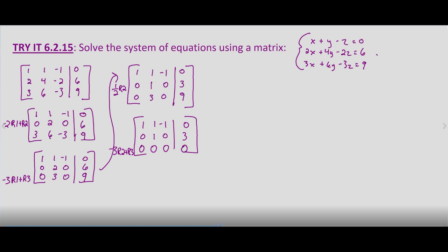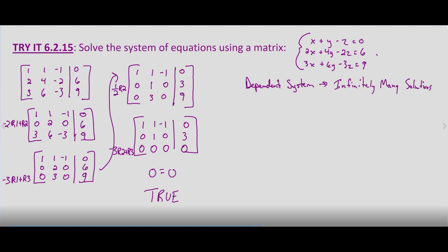In a previous example, we saw three zeros and then a constant, which meant an inconsistent system with no solution. But here we have zero equals zero, which is true — the variables fall out and we end up with a true statement. That means we have a dependent system, and there are infinitely many solutions. Rewriting this as a system of equations: x plus y minus z equals zero, y equals three, and zero equals zero.